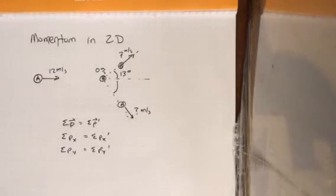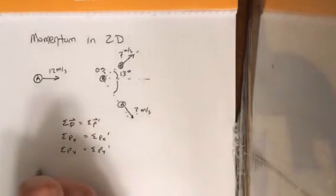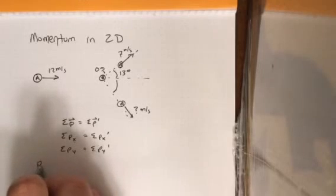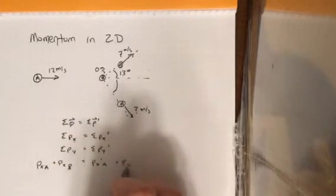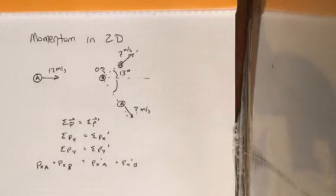So we need all the initial px's to equal px prime, all the initial py's to equal py prime. So what does that mean here? Well, we've got two objects, right? We have two objects at the beginning, we've got two objects at the end. So the sum of px's is going to equal px of A plus px of B equals px prime of A plus px prime of B. And we're going to have the same py of B equals px prime of A plus px prime of B. So those are our equations we've got to solve.